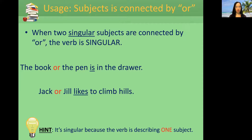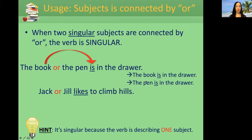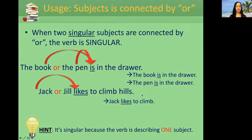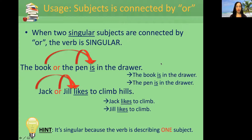What would happen if we used 'and' instead? Then it would become plural. Remember: 'the book is in the drawer' or 'the pen is in the drawer.' 'Jack likes to climb' — 'Jill likes to climb.' When we use 'or,' we're describing the singular subject — only one of the subjects.